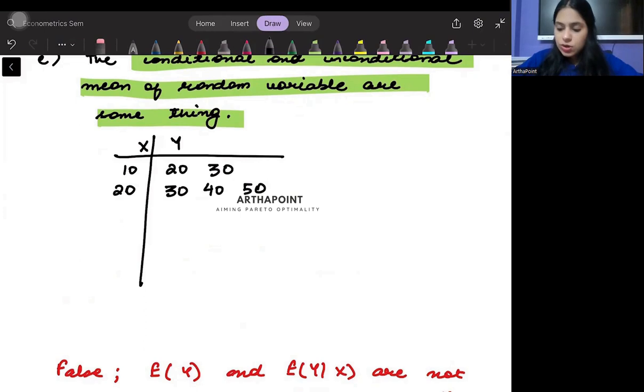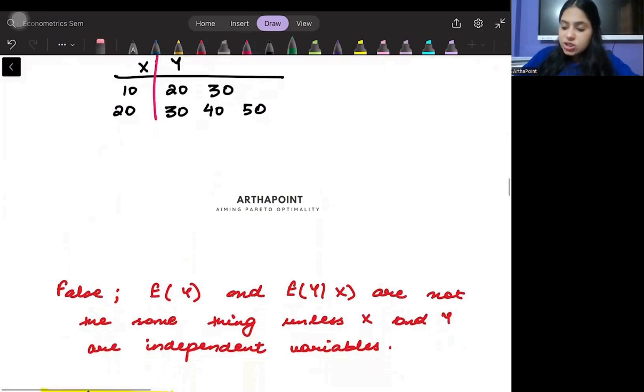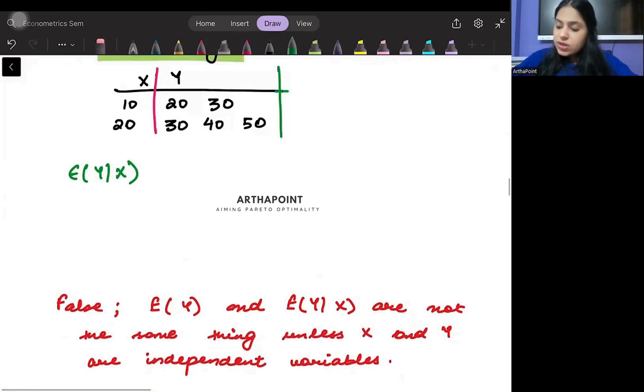I don't want to create a very large dataset to prove the point. A conditional mean is E of Y given Xi. So if I were to find out the conditional mean, I would have done E of Y given X.